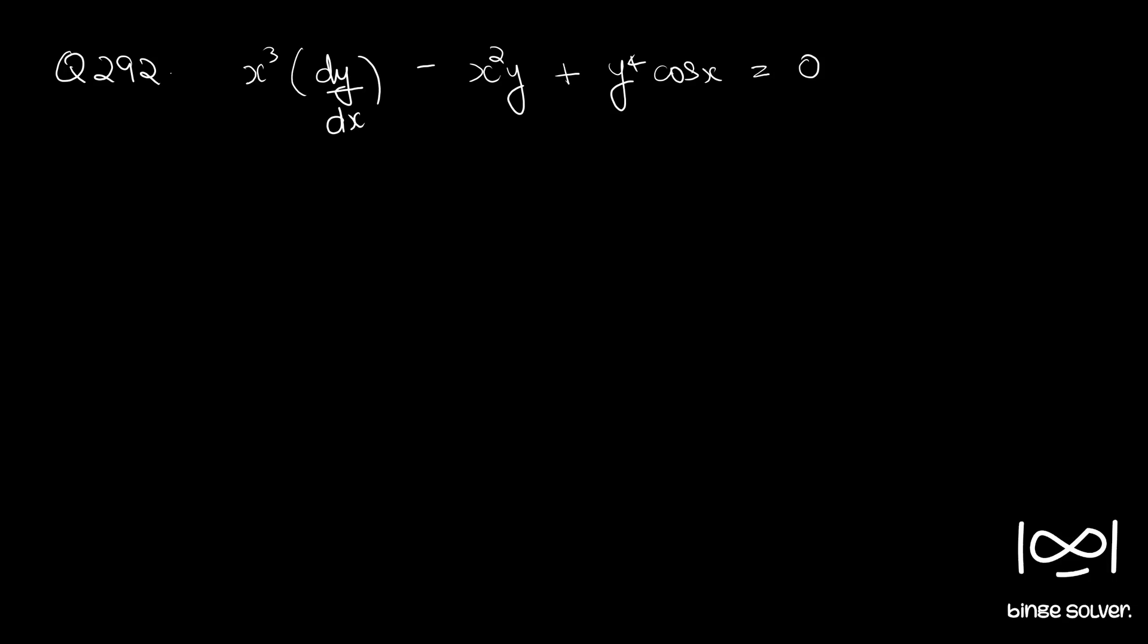Question number 292: x cubed dy by dx minus x squared y plus y raised to 4 cos x is equal to 0.